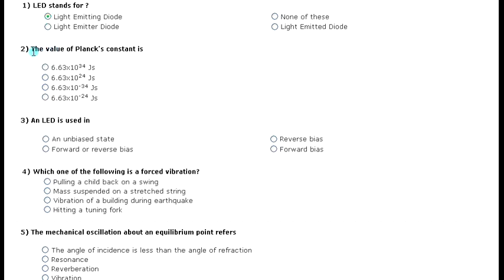Second question: the value of Planck's constant is - options include 6.53 times 10 to the power plus 34 joules, 6.63 times 10 to the minus 24 joules, 6.63 times 10 to the minus 34 joules. The right answer is 6.63 times 10 to the minus 34 joules second.